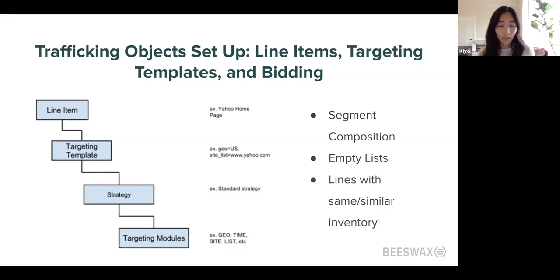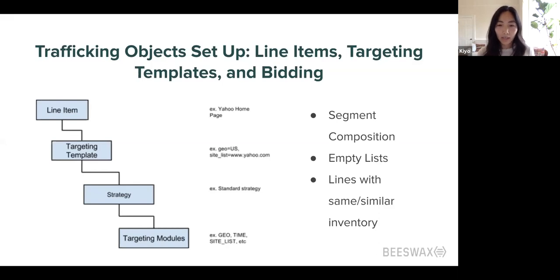This is one of the most common line item issues that causes no bids. Another gotcha is empty lists. When you scale up and build many campaigns and lines, it's easy to have a list object — which lives separately from the overall line item targeting screen — that has no items in it. You might set up that list without adding, for example, a deal ID or a domain, then apply it to your line item. Even if everything else is set up perfectly, because your list is empty you will not bid. Check that everything on your targeting template has actual items in it that you can bid against.